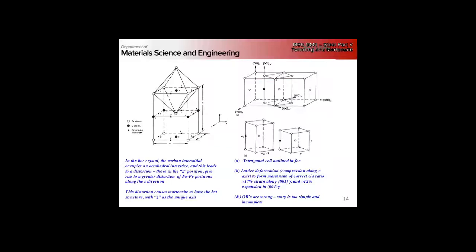As a reminder, carbon in the BCC lattice sits in the octahedral site, giving us a distortion — a greater distortion along the Z direction — and that's what gives us our BCT structure. Despite BCC being a more open structure, its interstitial sites are actually smaller; there's less room to accommodate carbon than in the FCC structure. The Bain distortion also doesn't give us the correct orientation relationship — the story is just too simple and incomplete.